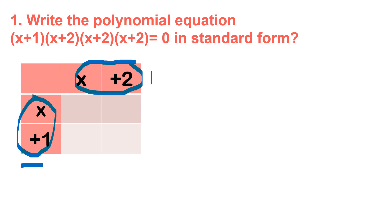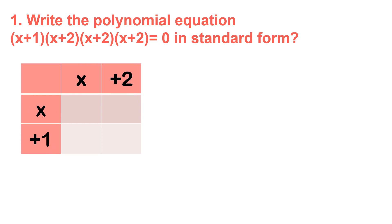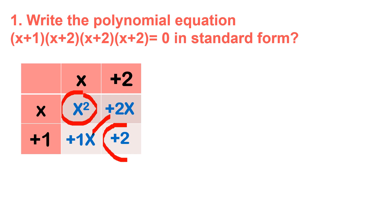So what we do here is multiply x times x, which gives us x squared. Then x times positive 2 gives us positive 2x. Next, x times positive 1 is positive 1x, and positive 1 times positive 2 is positive 2. Then solve the diagonal entries and combine like terms. This gives us x squared plus 3x plus 2.